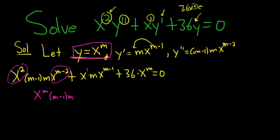Same thing here, 1 plus m minus 1, that gives us x to the m times m, and then here we have x to the m times 36.